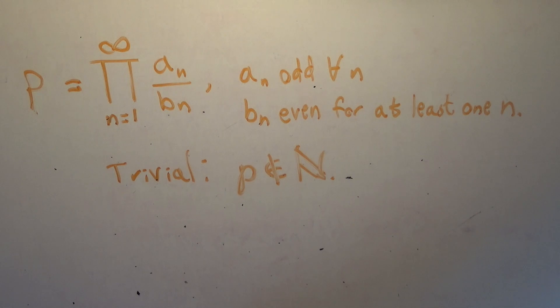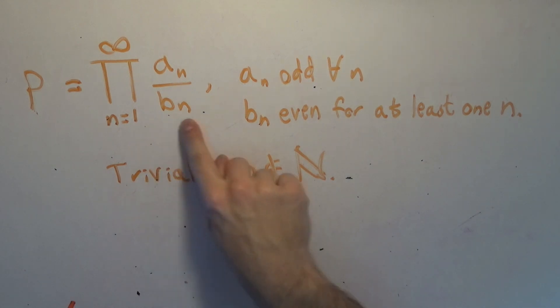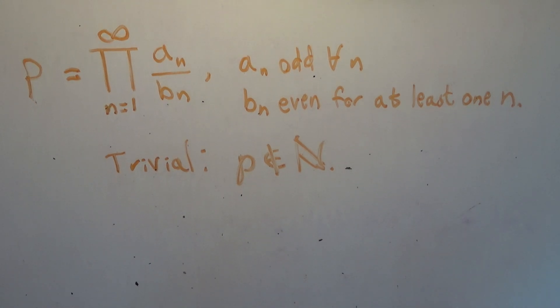Now my counterexample to this is quite a nice one, but it's a counterexample in that every B_n is even in my counterexample. So that means infinitely many. Now I haven't been able to find a counterexample where only finitely many are even. So I'm assuming my counterexample is based on the fact that all the B_ns will be even and all the A_ns will be odd, and I will still get an integer from this infinite product.